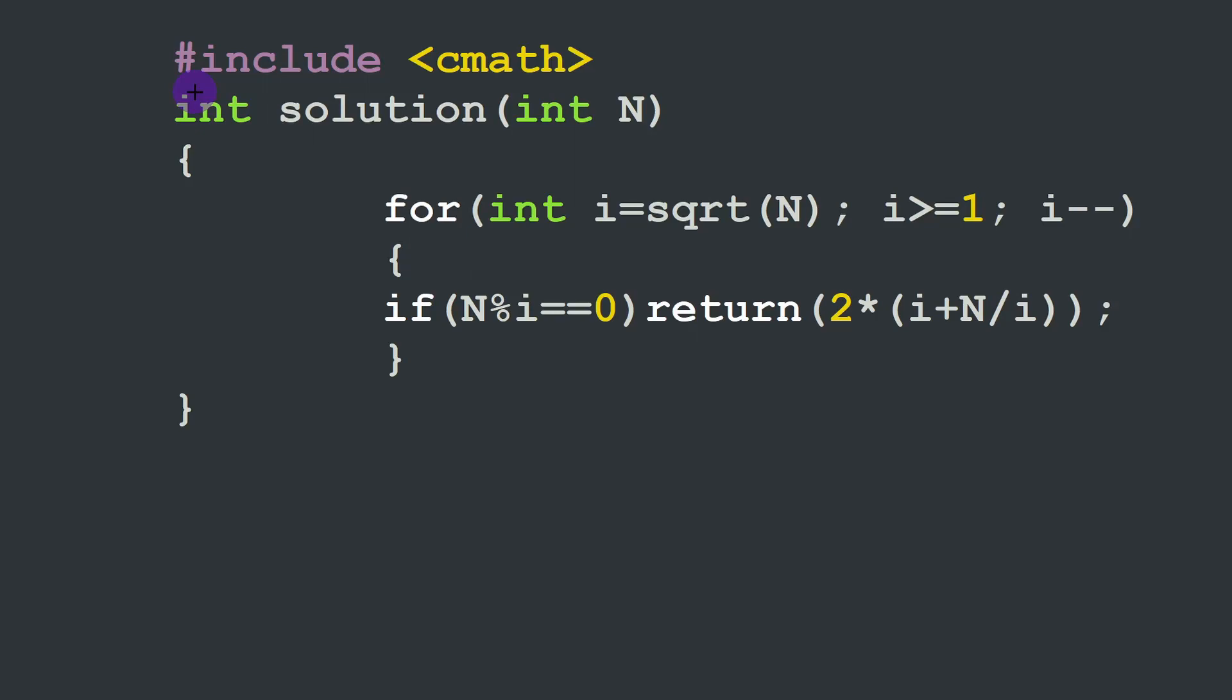This is our solution function in C++. It takes the N integer which is the area of the rectangle. For i equal to square root of N, we are going to limit our search up to i, which means one of the sides of the rectangle is at least equal to one. We cannot go down to zero because it's meaningless; the rectangle doesn't have an area in this case. We decrement i for each iteration.